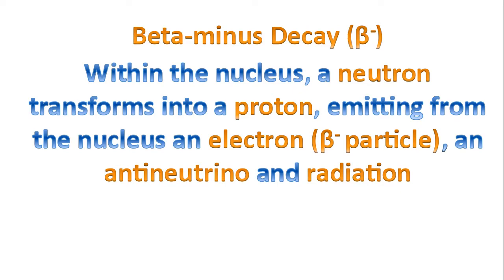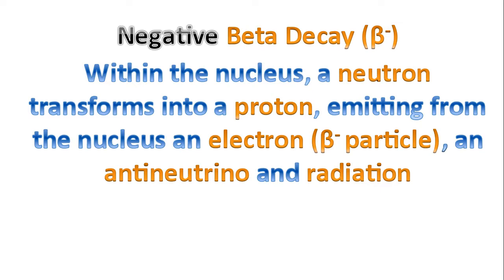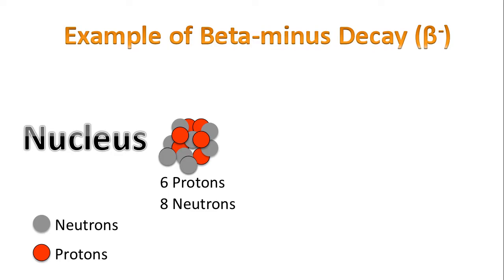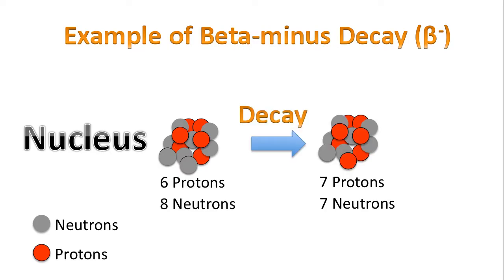Now let's focus specifically on a beta minus decay. Within the nucleus, a neutron transforms into a proton, emitting from the nucleus an electron — which is a beta minus particle — an antineutrino, and radiation. This is also referred to as a negative beta decay. Looking at an example: we have six protons and eight neutrons. This decays to form seven protons and seven neutrons. Notice that a neutron has been transformed into a proton.